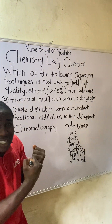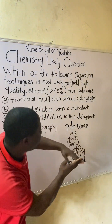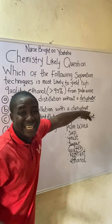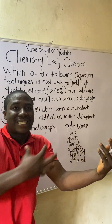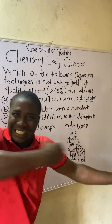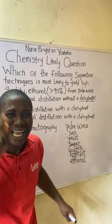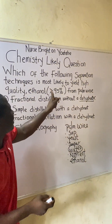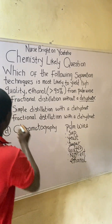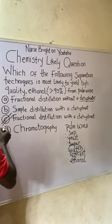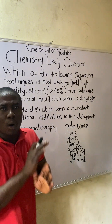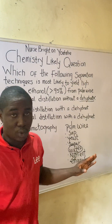Option C has fractional distillation — which separates well — and it also has a dehydrant. That means all the water found in the palm wine will be removed by the dehydrant, ensuring that ethanol of 95% purity or above is produced. So the answer to this question is option C, not option A or B.